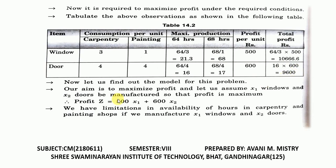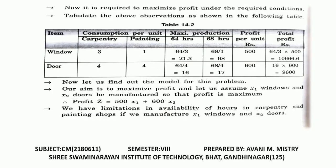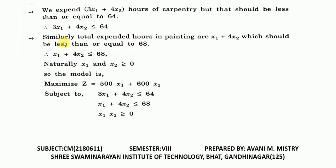Now let us find out the model for this problem. Our aim is to maximize profit. Let us assume x1 windows and x2 doors are manufactured so that the profit is maximum. Profit Z equals 500x1 plus 600x2. We have limitations in availability of hours in carpentry and painting shops. If we manufacture x1 windows and x2 doors, we expend 3x1 plus 4x2 hours of carpentry, which should be less than or equal to 64 hours.